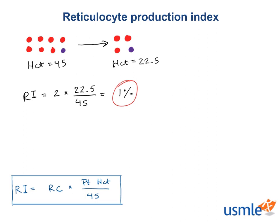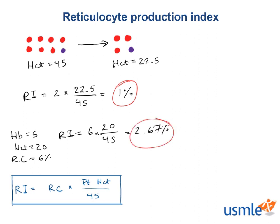Let's go back to our lady who came in with a hemoglobin of 5 and hematocrit of 20. In this example, her reticulocyte count was 6%. When you calculate her reticulocyte index: 6 × (20 / 45) = 2.67%. In other words, her corrected reticulocyte count is not 6% but rather 2.67% — meaning 2.67% of her red blood cell mass is reticulocytes.